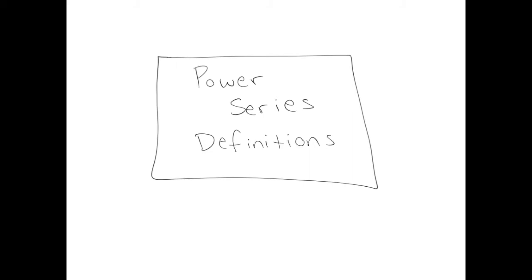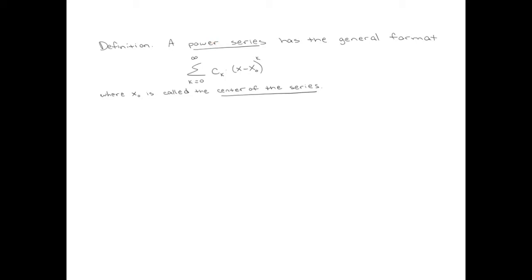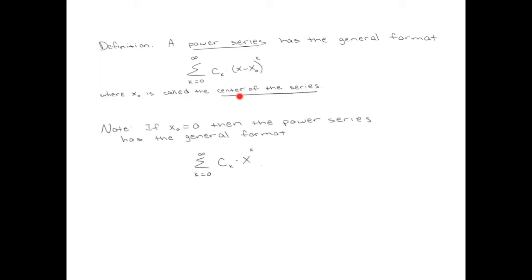In the first part of this video, we're going to review some definitions for power series. A power series generally has the format of some numbers that depend on the index, which we'll call c_k. Those are the coefficients — that's why we use the letter c. Then we have x minus x_0 raised to the k power. The x_0 is called the center of the series.